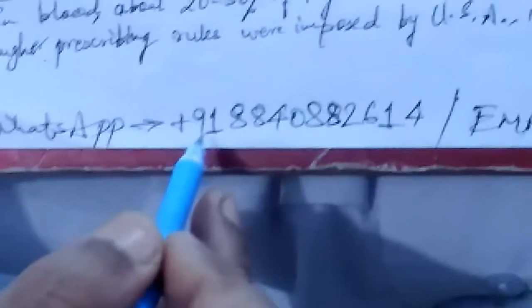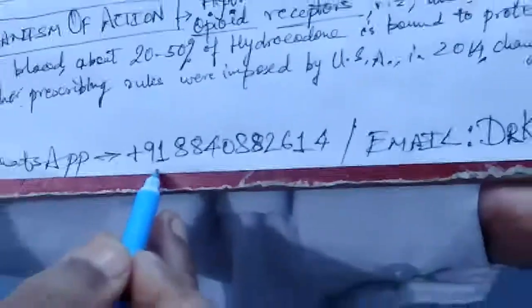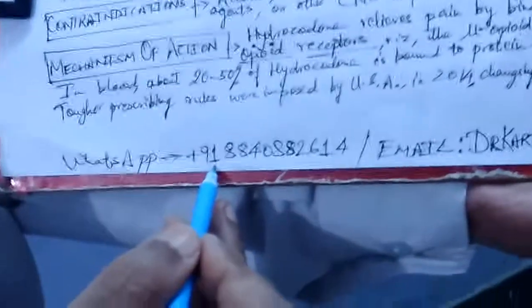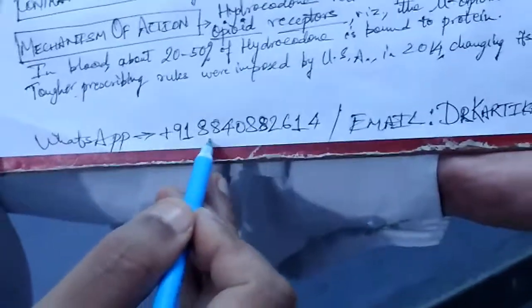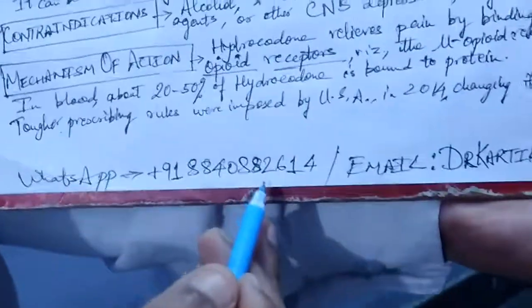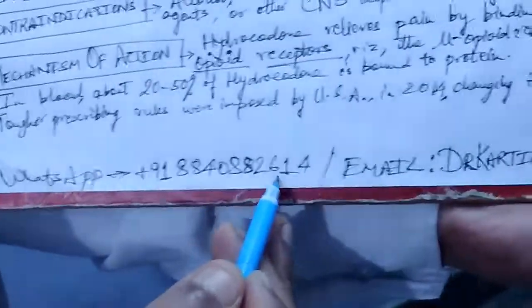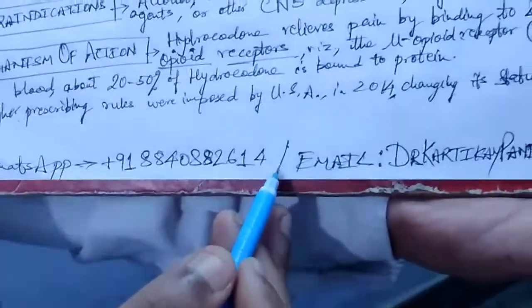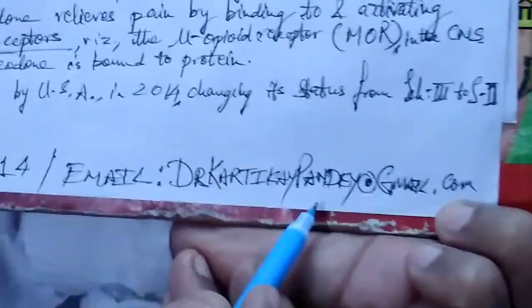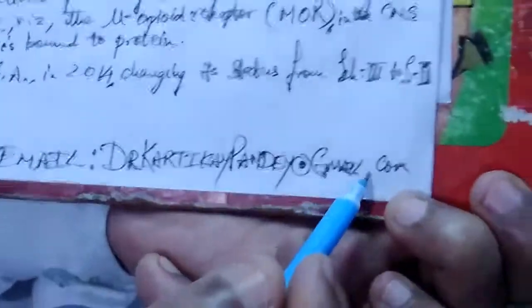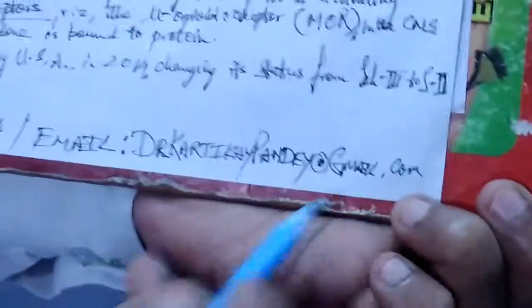For more details on hydrocodone and other drugs, you can contact me at my WhatsApp number — plus 91 (India country code) 8840882614 — or you can email me at drkarkarthikepande@gmail.com. Thank you, friends.